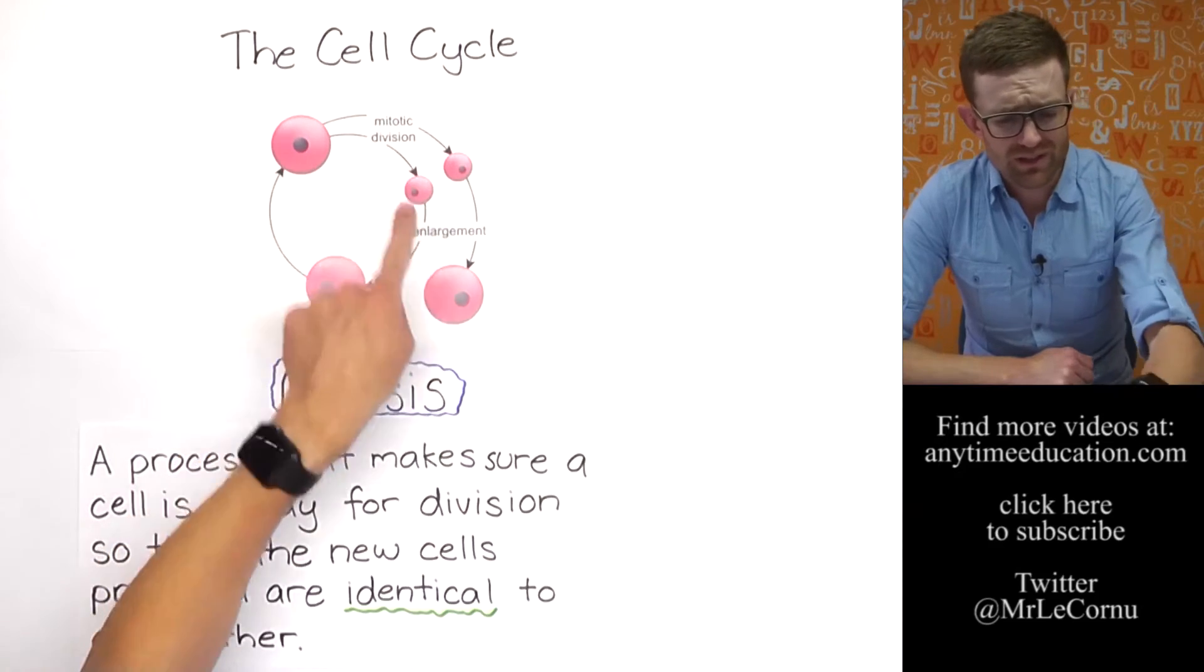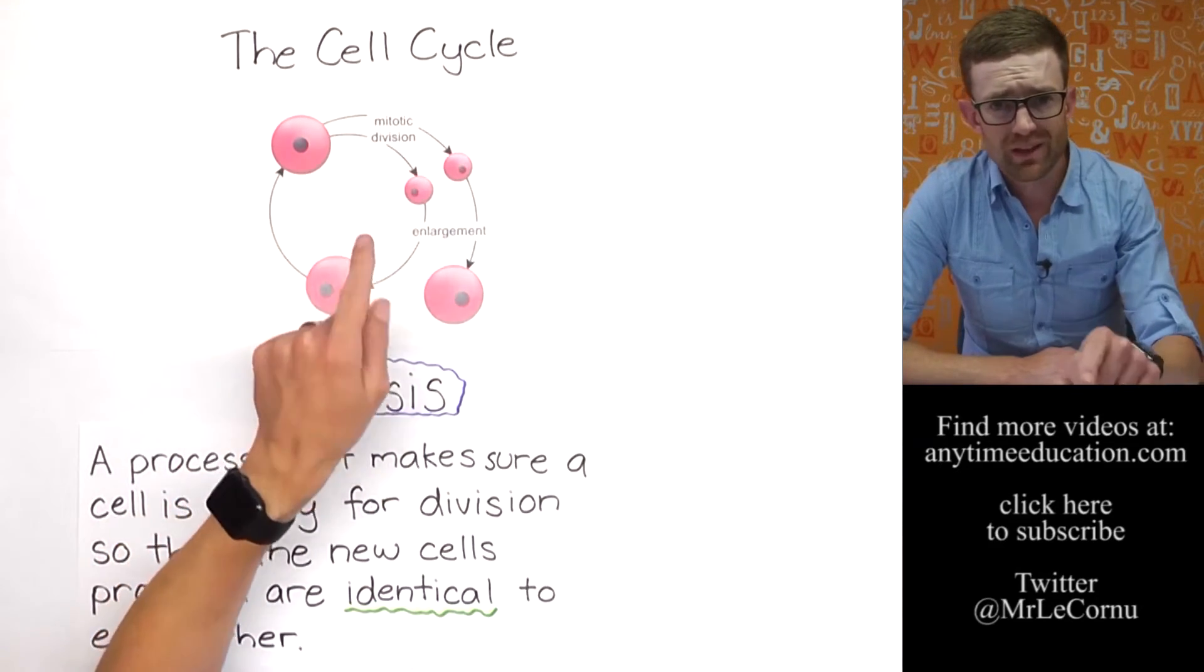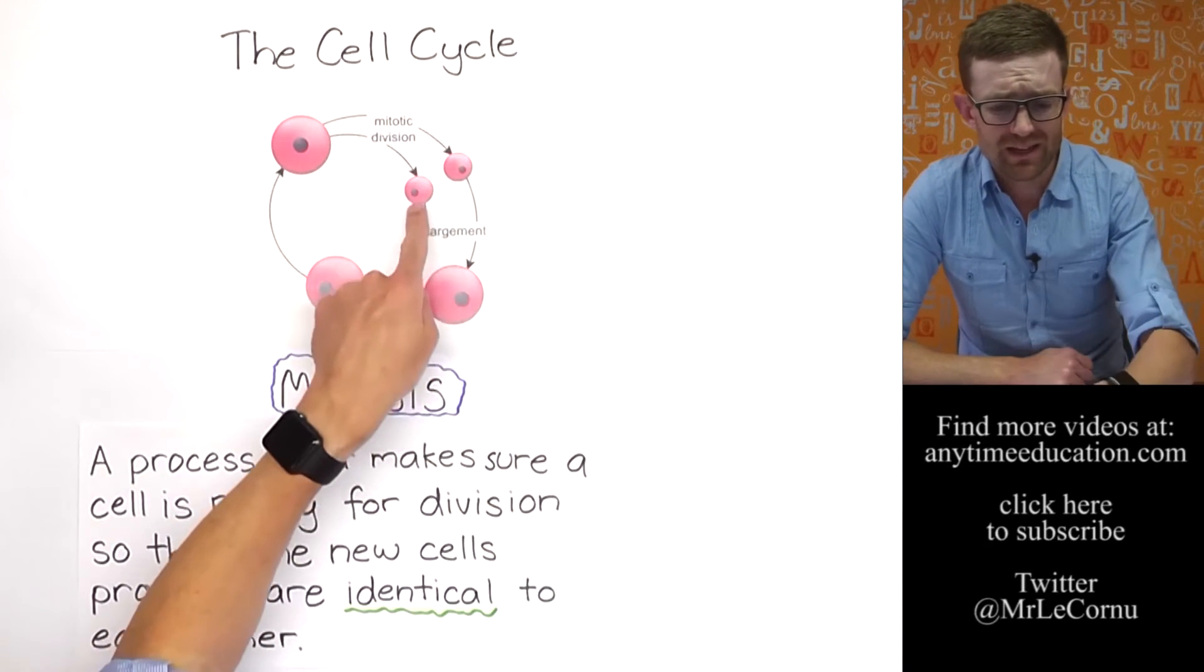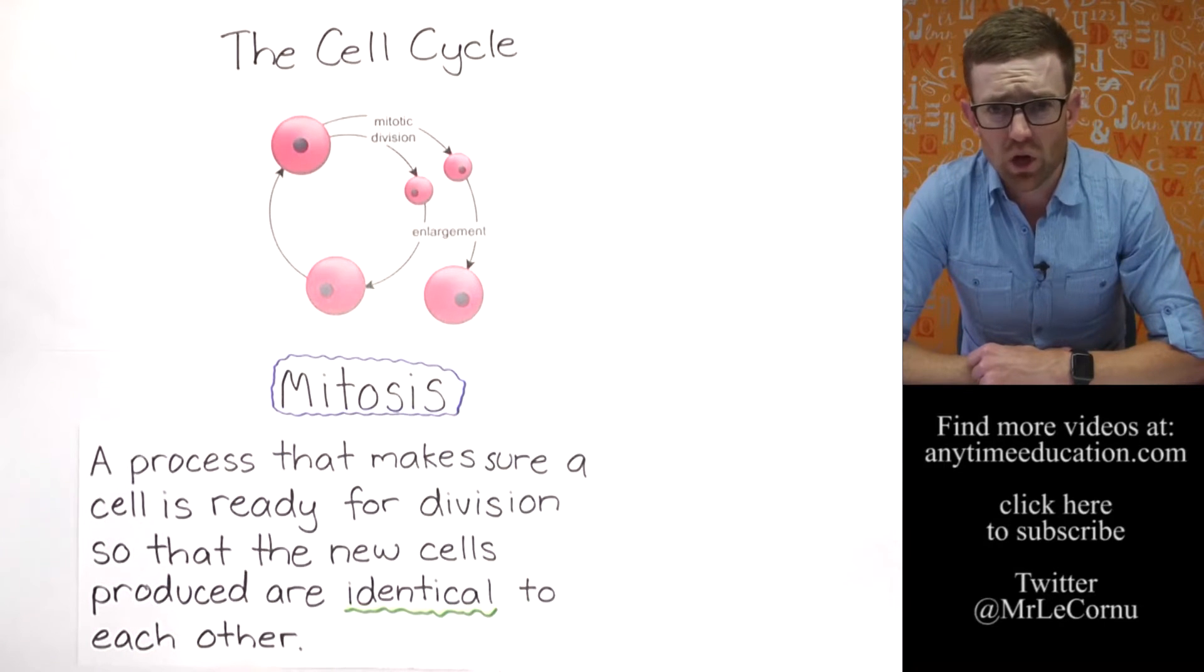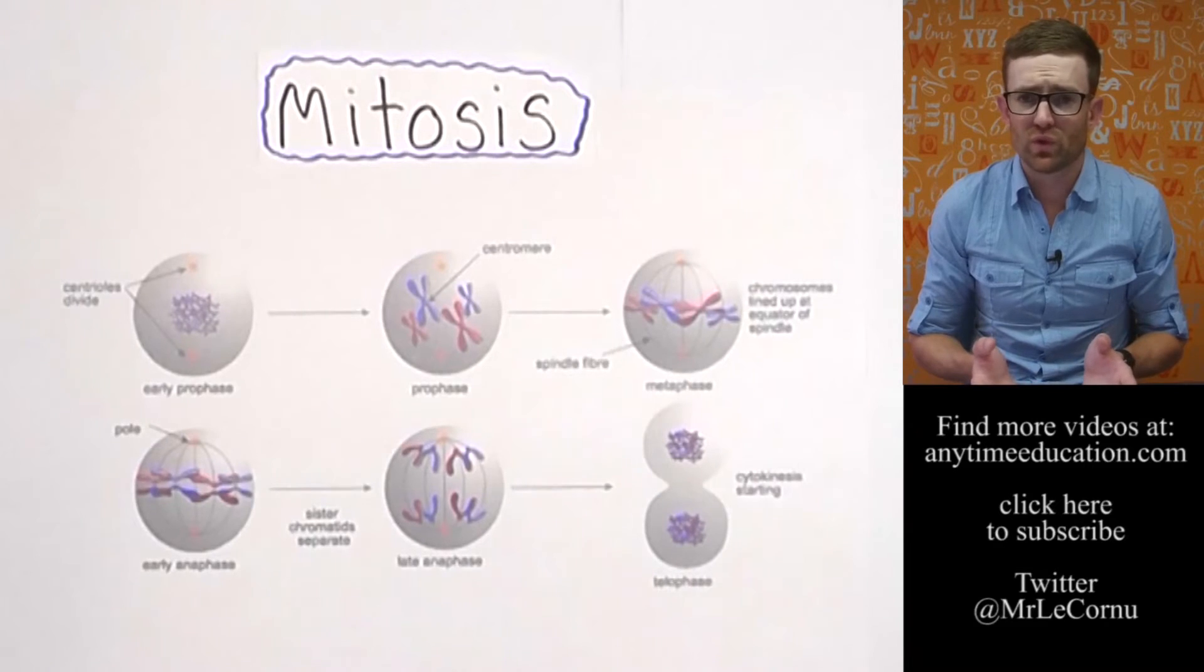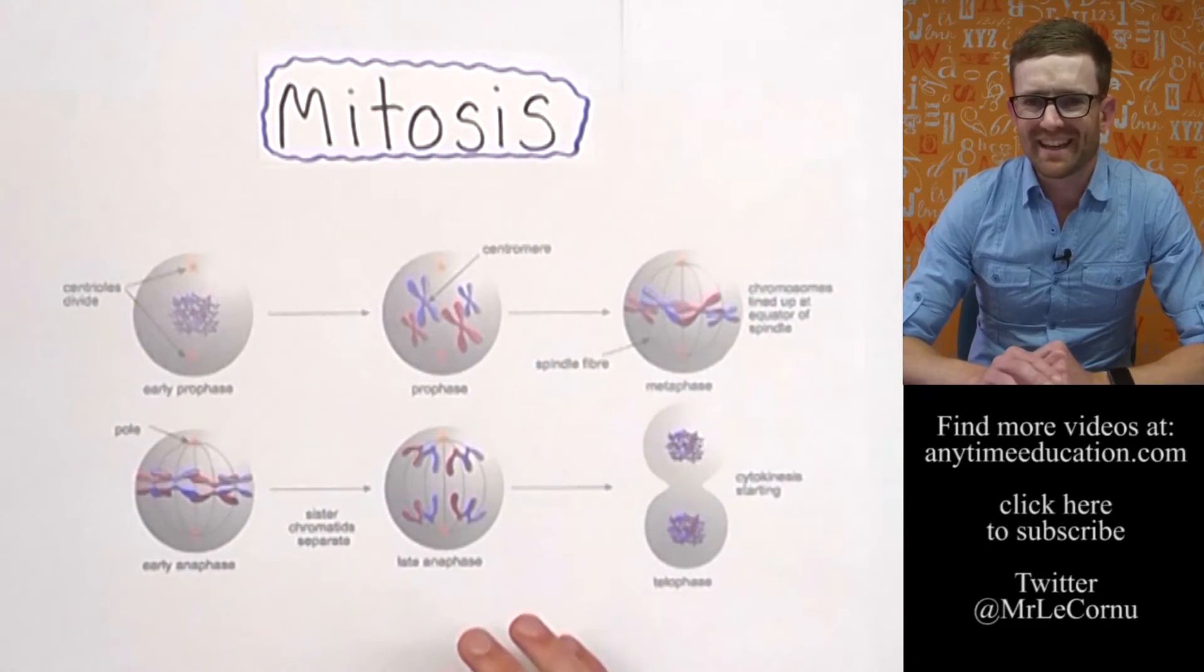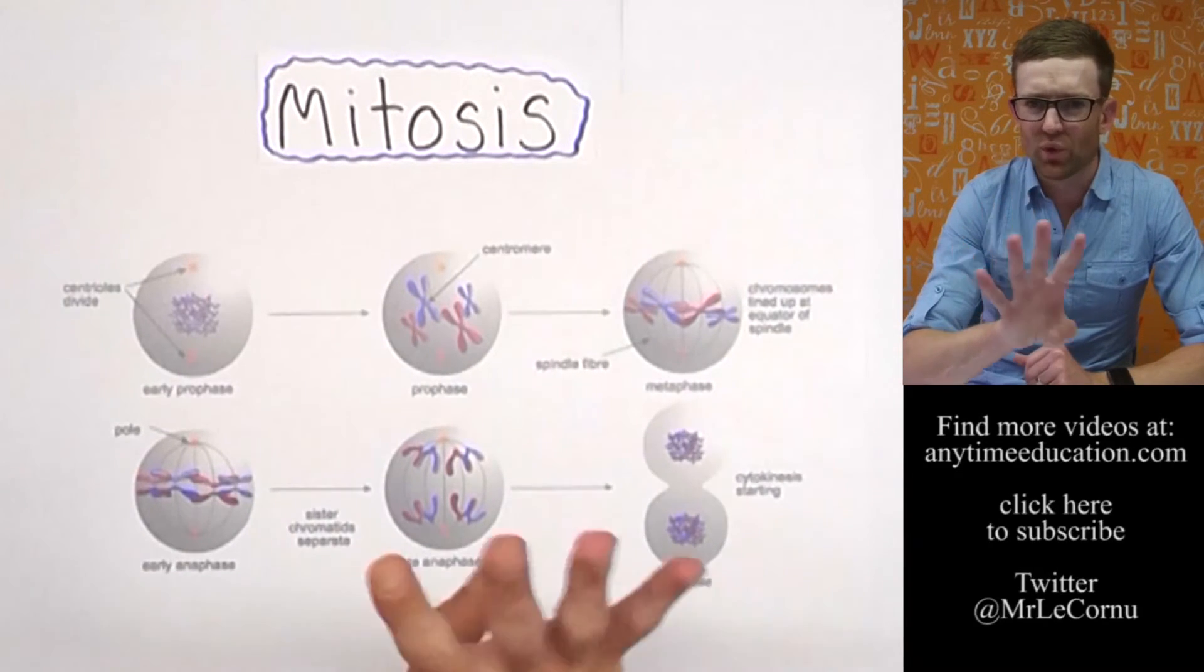So mitosis is the part near the end of the cell cycle where the DNA in the nucleus is equally divided so that each new daughter cell will get an identical copy, and it happens right before the cell divides into two. Here's an overview of what takes place in mitosis.